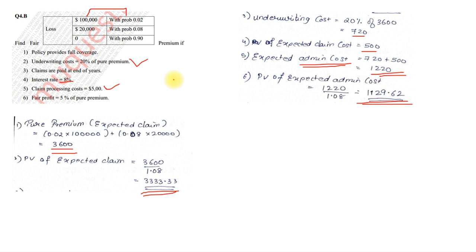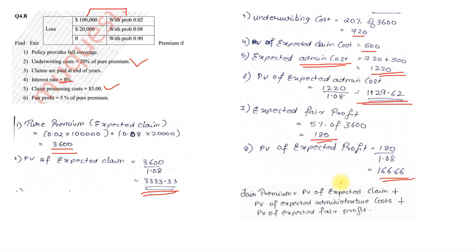Last, they have given you the fair profit which is 5% of pure. So, 5% of 3600 is 180. PV of that will be 180 divided by 1.08. So, it comes to 166.66. Last, fair premium is PV of expected claim plus admin plus fair profit. When you add up all those three values, our final answer comes to 4629.61.